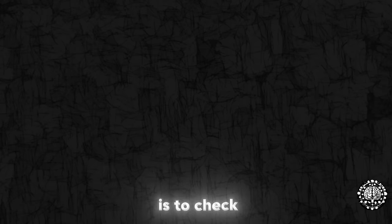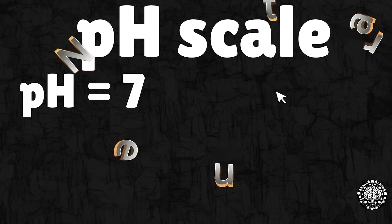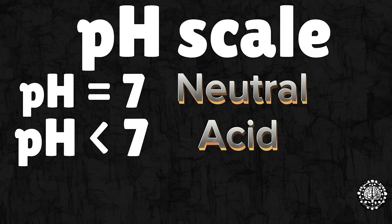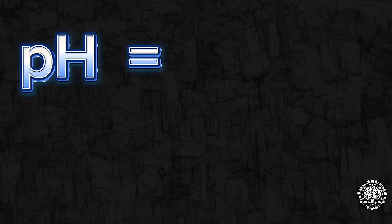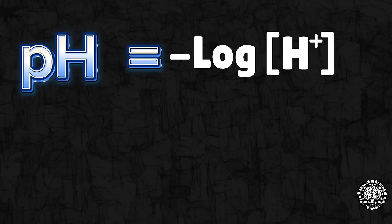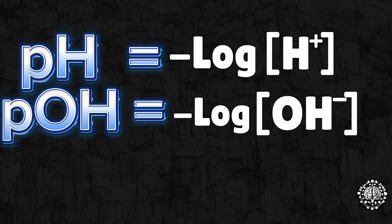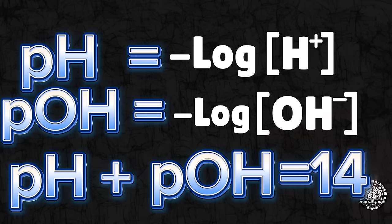Another way to know whether a solution is an acid or a base is to check the pH scale. When the pH is at 7, then it is neutral. When the pH is less than 7, then it's an acid. And when it is greater than 7, then it's a base. The pH equals the negative log of the H⁺ ion, and the pOH equals the negative log of the OH⁻ ion. You also need to know that pH plus pOH equals 14.